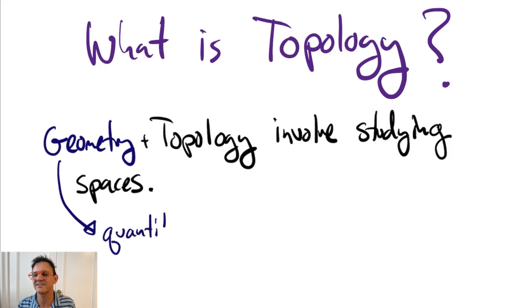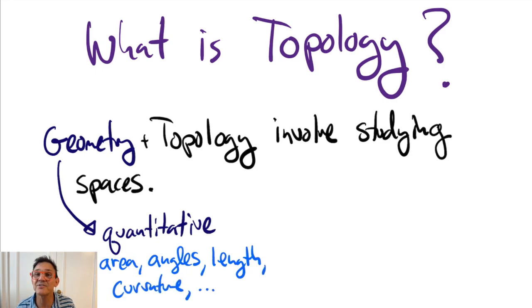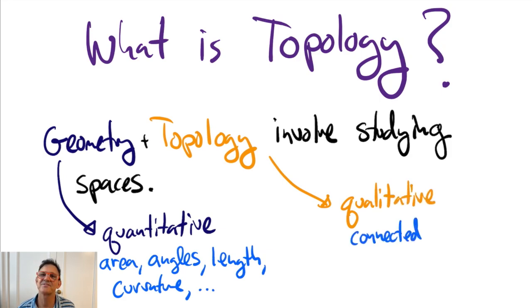It involves things like angles and lengths, areas, volumes, curvature. Topology is a more qualitative study of space and concerns concepts like connectedness and dimension.